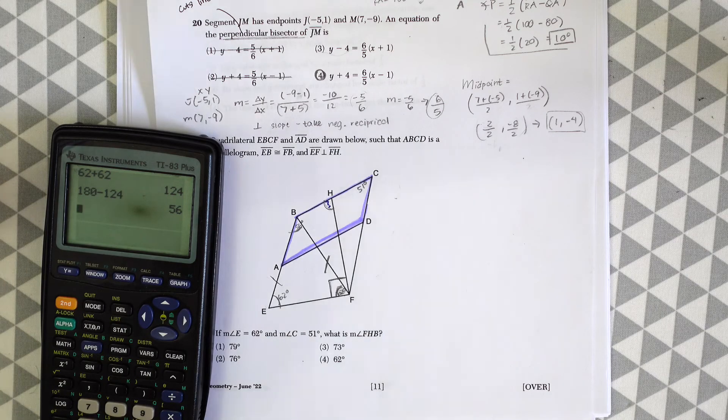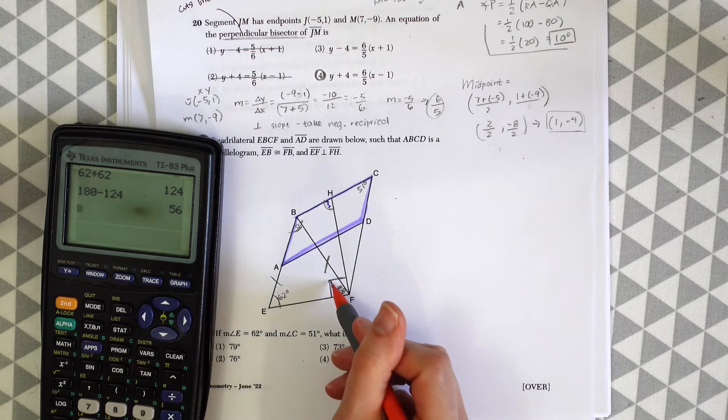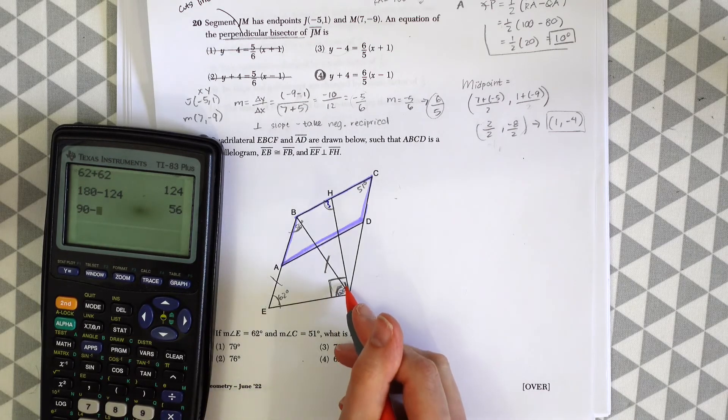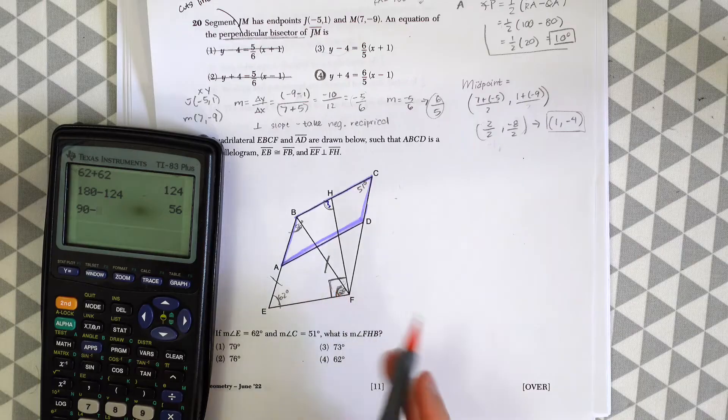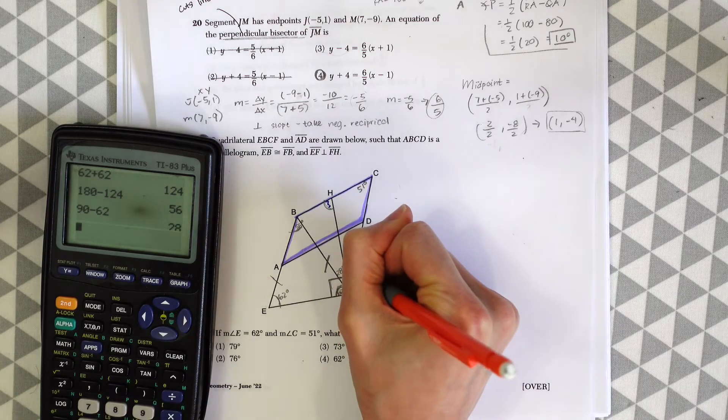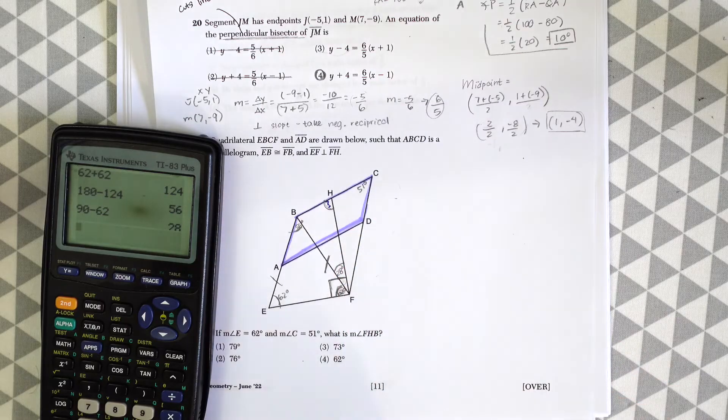Now let's use the right angle. This is 62 degrees, so to find this angle, we do 90 minus 62, which is 28 degrees.